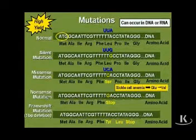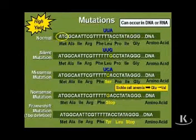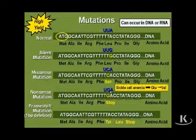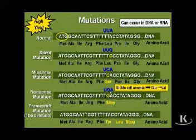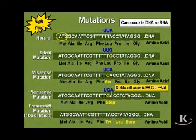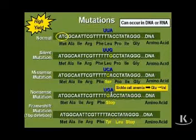Moving on to nonsense mutations. A nonsense mutation happens when, say, the TTA initially present in the normal gene got mutated to TGA, which corresponds to UGA in the messenger RNA. When the ribosome sees UGA, that's a stop codon — one of the three stop codons. The ribosome separates and releases the protein. In most cases, you end up with a truncated, shorter protein that is usually non-functional.